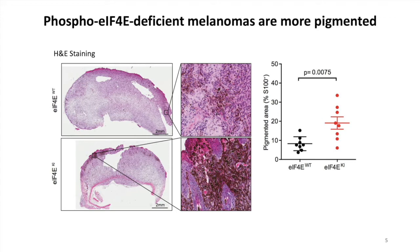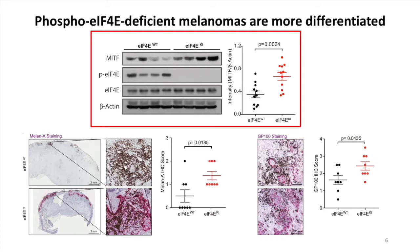We also noticed that the knock-in primary tumors are more pigmented compared to the wild-type tumors. The pigmentation of skin cells is due to the production of melanin, which is a key feature of melanocyte differentiation, and is tightly regulated by a key lineage transcriptional factor called MITF. Indeed, we were able to show that the knock-in tumors have higher expression of MITF, meaning that they are more differentiated, while the wild-type tumors are more de-differentiated.